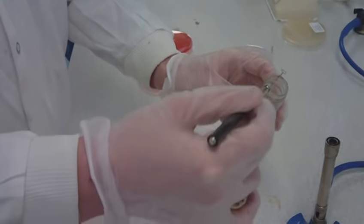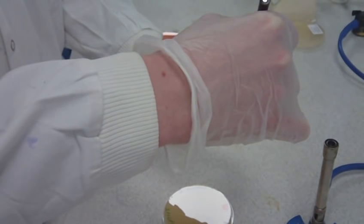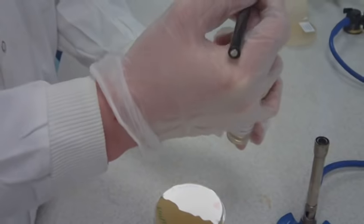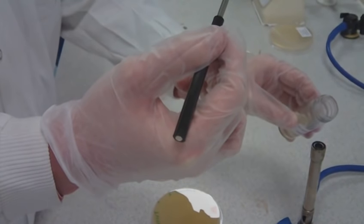Once the bottle is sterile, put the loop into the suspension without touching the sides of the bottle. Remove the loop and re-flame the neck of the bottle before closing the lid to sterilize.